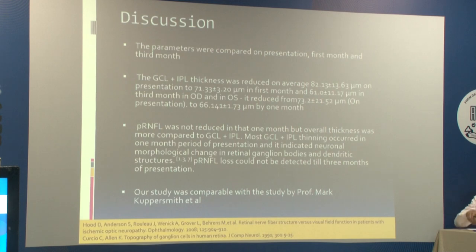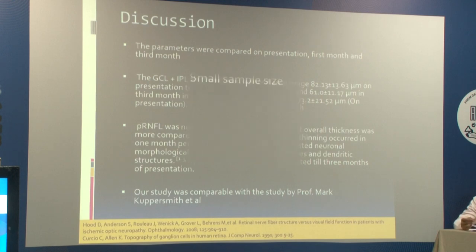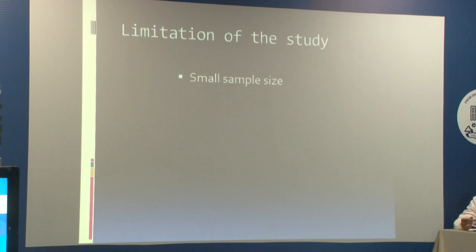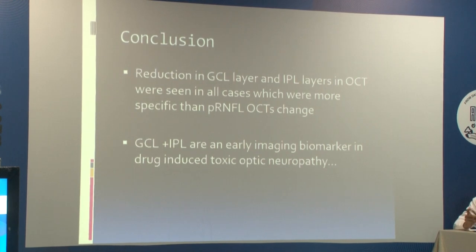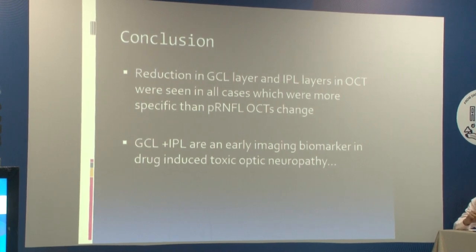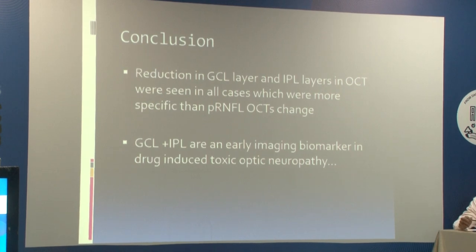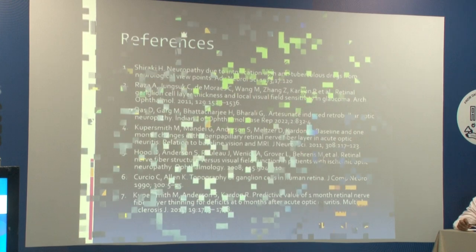Our study was comparable with a study by Professor Mark Kupersmith, who used both 2D and 3D segmentation in OCT. The limitation of this study was the small sample size. To conclude, reduction of GCL and IPL layer thickness in OCT was seen in all cases and was more specific than PRNFL OCT changes. GCL and IPL are early imaging biomarkers in this study for drug-induced toxic optic neuropathy.